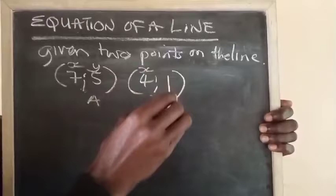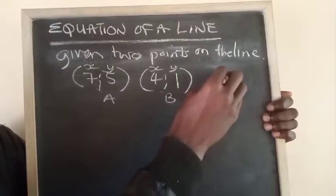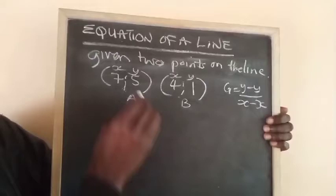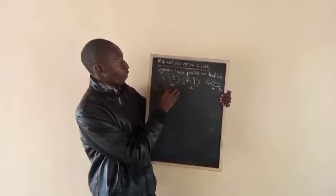First we will use the formula for the gradient, which is y minus y over x minus x. So we write y2, which I'll write here, which is 5, minus y1.